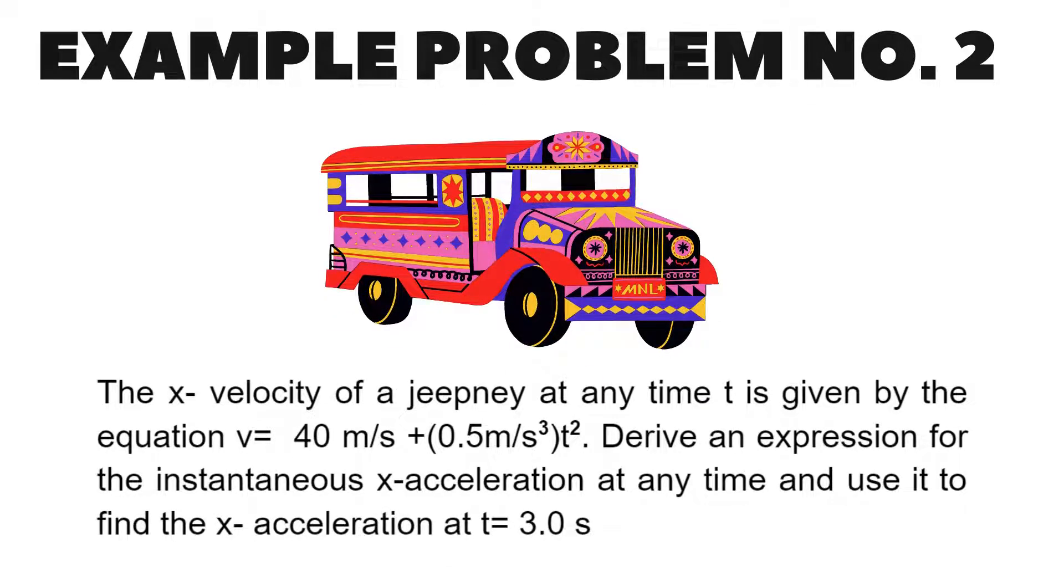Example problem number 2. The x velocity of a jeepney at any given time t is given by the equation v is equal to 40 meter per second plus 0.5 meter per cubic second t squared. Derive an expression for the instantaneous x acceleration at any time and use it to find the x acceleration at t is equal to 3 seconds.